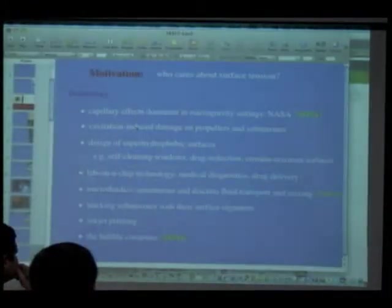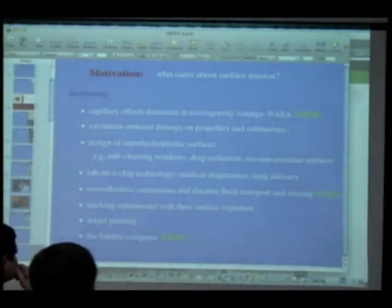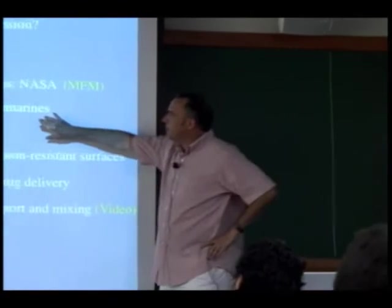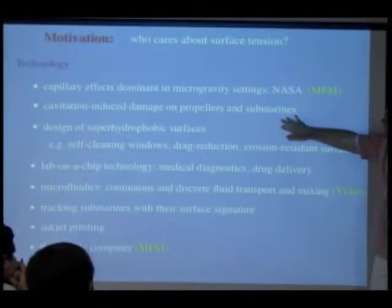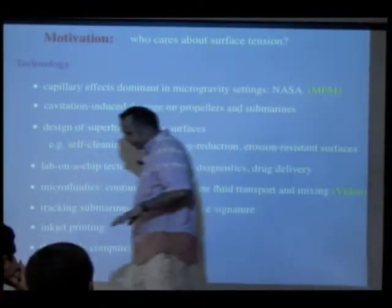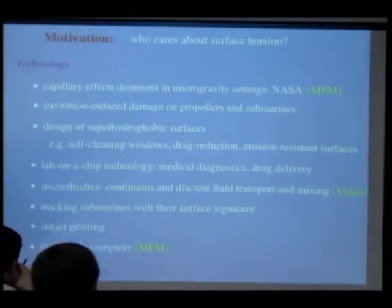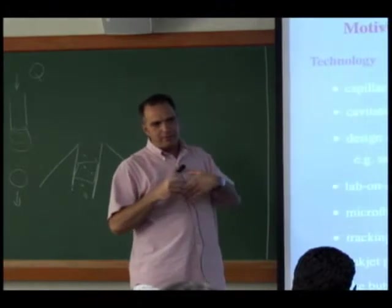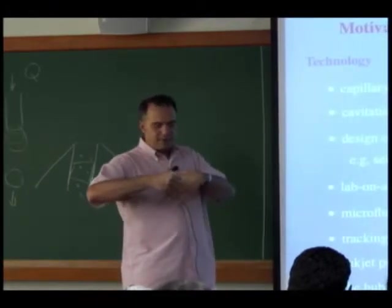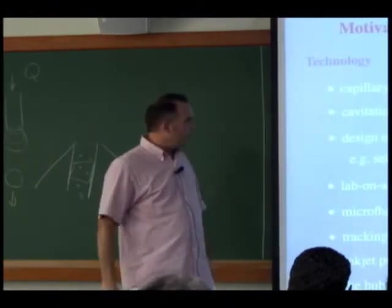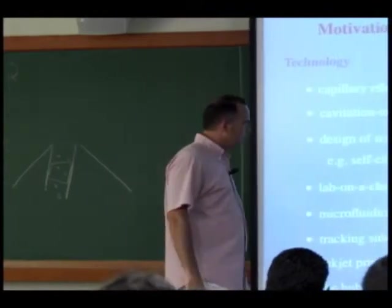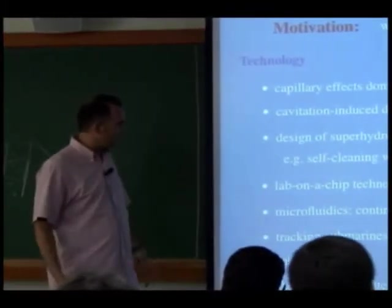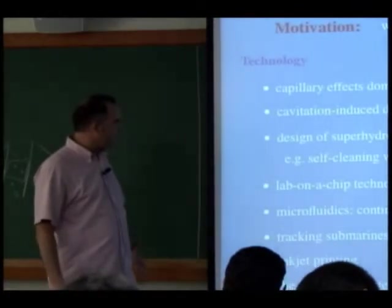When we were looking at the pistol shrimp, we mentioned bubbles exploding near solid surfaces can do a lot of damage. If you look at propellers on boats, there are often pockmarks — this is because of the implosion of cavitation bubbles near the propellers. The damage done to submarines by depth charges is similar: it comes from the collapse of bubbles.